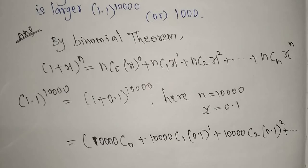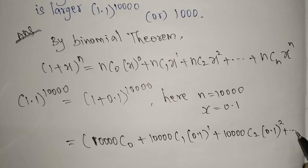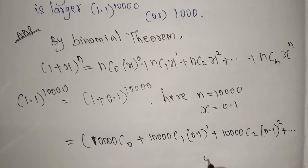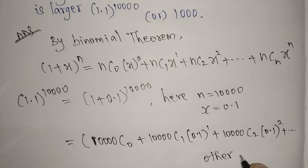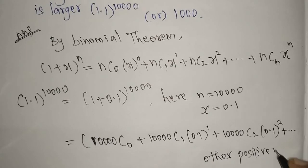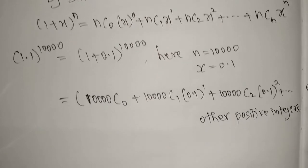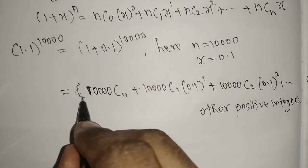Up to it will go, so I'm writing simply other positive terms. Now C0, you will get 1 only directly. C1, now what we have here? You will get 10000 times 0.1.